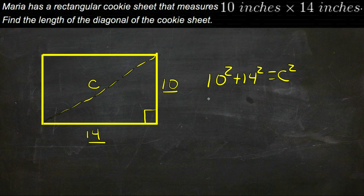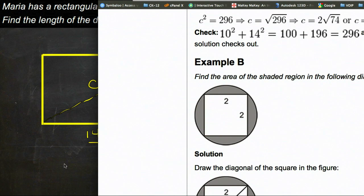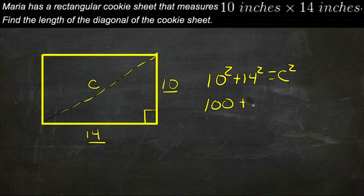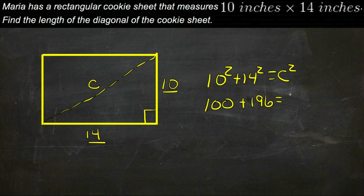So we have 100 plus, oh geez, 14 squared is 196, so we have 100 plus 196 equals C squared.